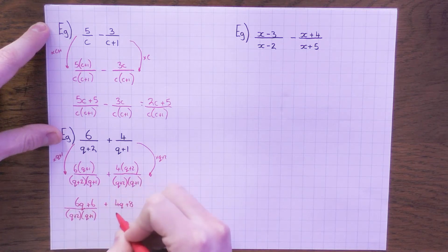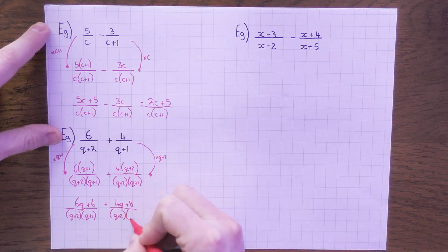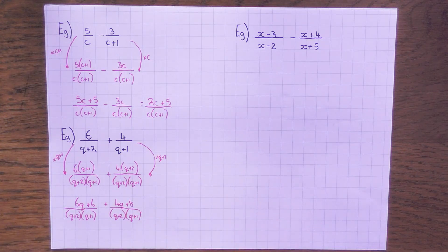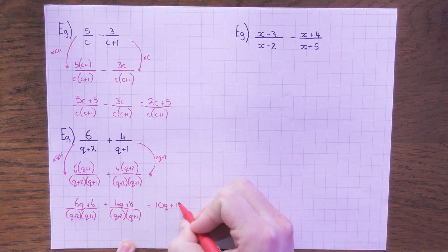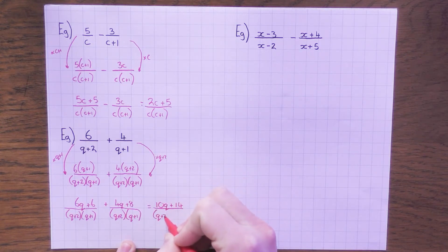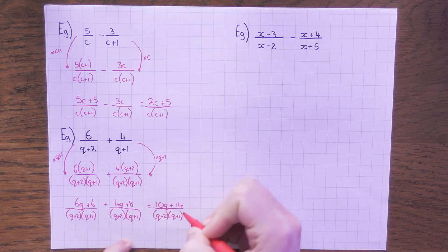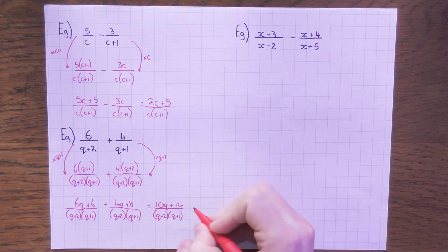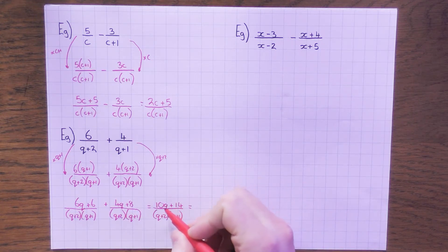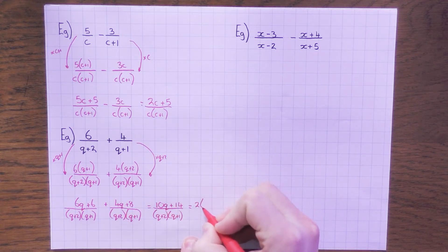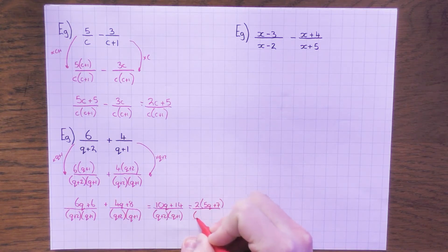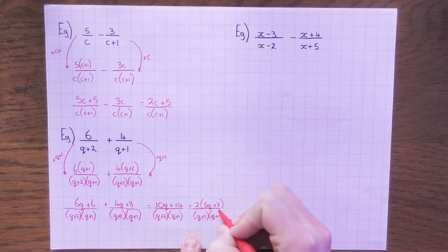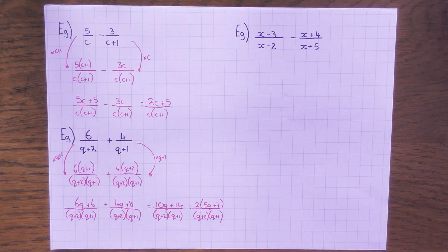So we can add the numerators: 6q plus 4q is 10q, and 6 plus 8 gives us 14, all over (q + 2)(q + 1). Now if it says put it in its simplest form, you can factorise the top — 2 is the highest common factor of 10 and 14, so factorise to get 2(5q + 7) over (q + 2)(q + 1). That's the extra simplifying step, and there we have our answer.